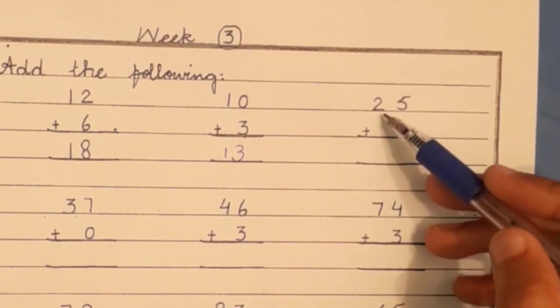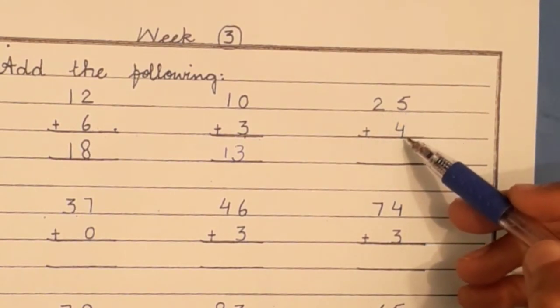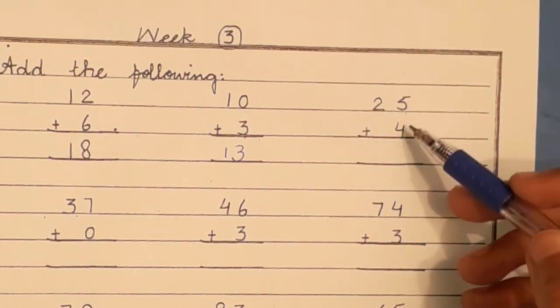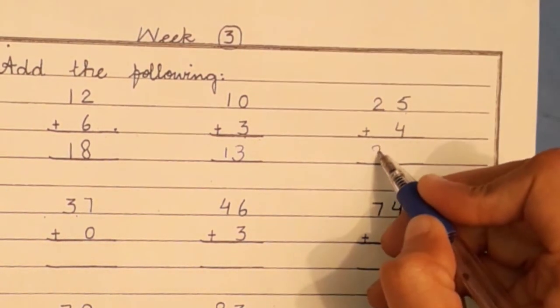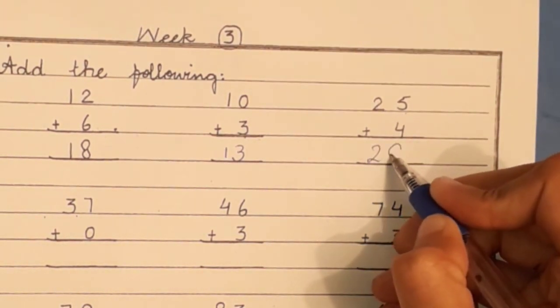Next question is we have to add four. So we will add four numbers. 26, 27, 28, 29. So the answer is 29.